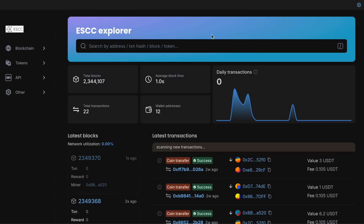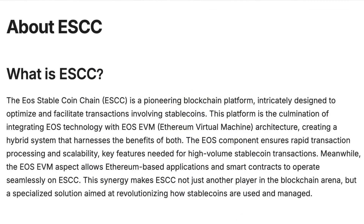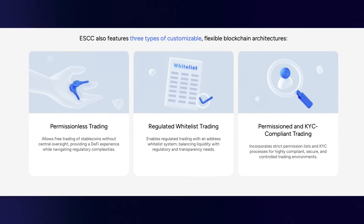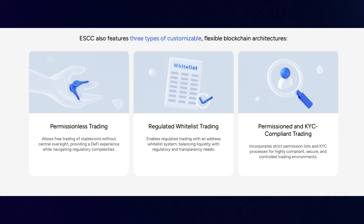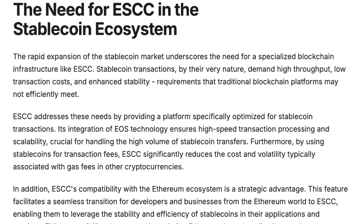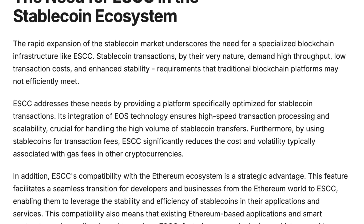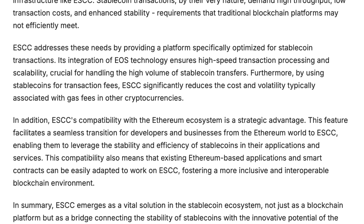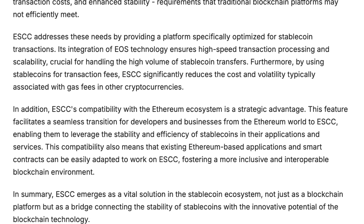The About ESCC page describes in detail the mission and vision of the project, focusing on the platform's desire to increase the efficiency of the blockchain and offer users reliable solutions for working with stable coins. The Features section highlights unique characteristics such as the stable gas mechanism and high performance. The Ecosystems section provides information about partnerships and applications supported by ESCC, demonstrating active interaction with other projects and contributing to the expansion of the platform's capabilities. Users can familiarize themselves with potential applications and learn about the community that actively supports the development of ESCC.